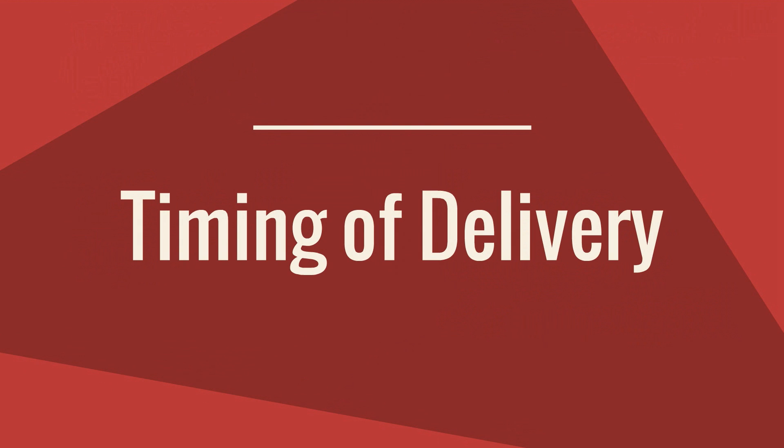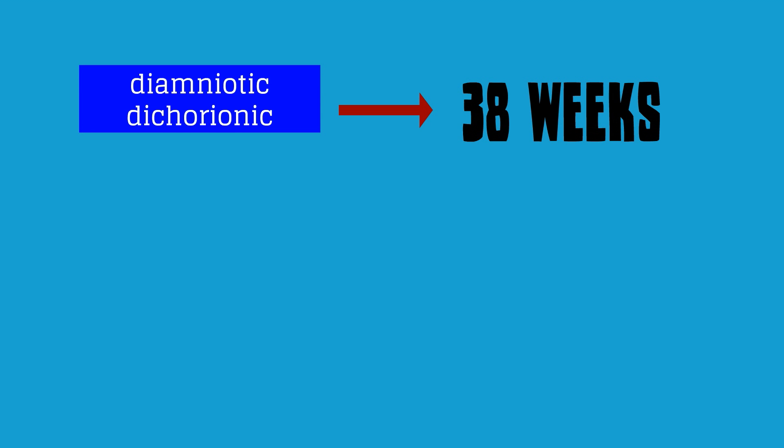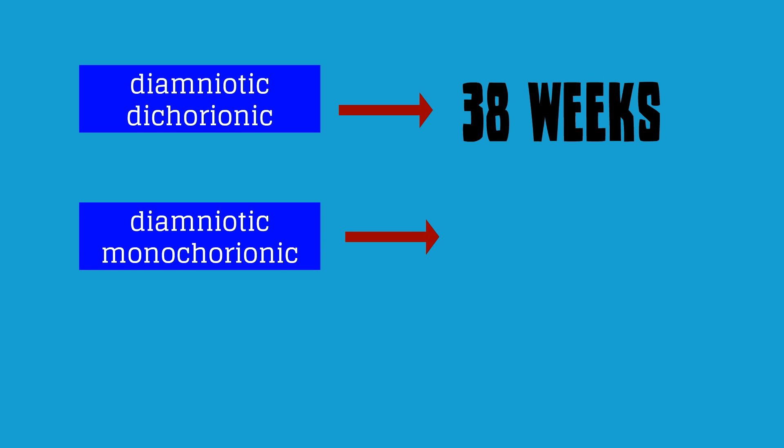Let's now move to timing of delivery. This also depends on the chorionicity. Uncomplicated diamniotic dichorionic or di-di twins can be delivered at 38 weeks. Uncomplicated diamniotic monochorionic or di-mo twins can be delivered between 34 and 37 in 6 weeks.